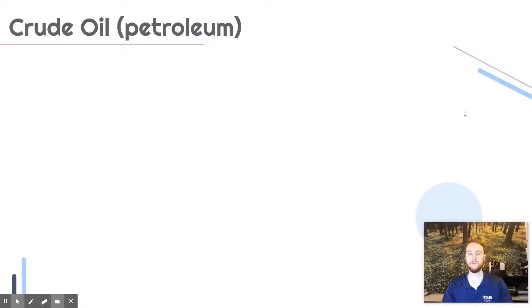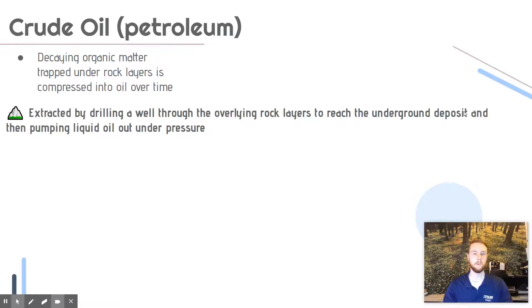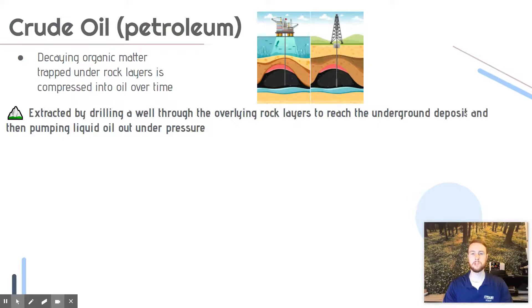Now we'll talk about crude oil, also referred to as petroleum. This is the decaying remains of organic matter trapped underneath rock layers and compressed over millions of years into oil — fossilized remains of organisms, primarily animals and plants that lived in the ocean. Oil is extracted by drilling through impermeable overlying rock layers to reach a permeable layer of rock that contains the oil, and then the oil is pumped out under pressure. This can be done either in the ocean or on land.